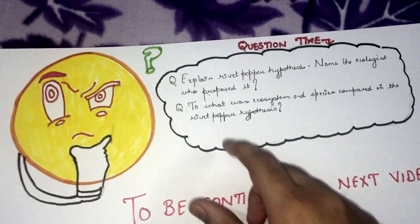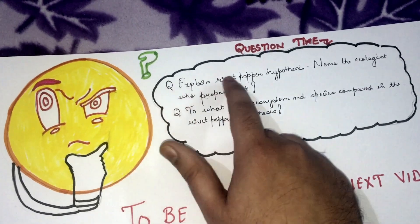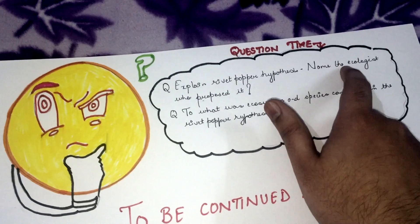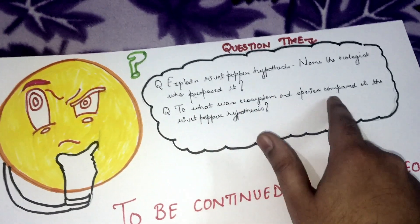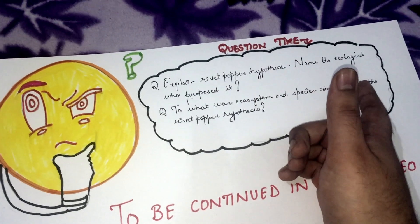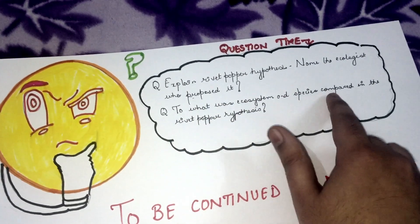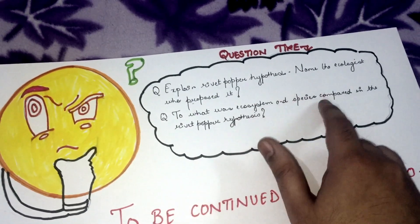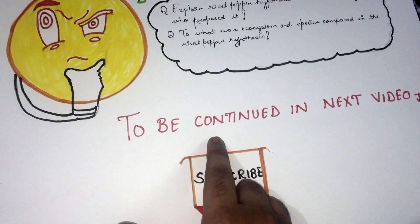Exam question: Explain the Rivet Popper Hypothesis and name the ecologist who proposed it. In the Rivet Popper Hypothesis, the ecosystem is compared to an airplane and species to rivets; it was given by Paul Ehrlich. Another question: To what were the ecosystem and species compared in the Rivet Popper Hypothesis? The ecosystem was compared with an airplane and species were compared with rivets. This chapter will be continued in the next video — please subscribe to the channel.